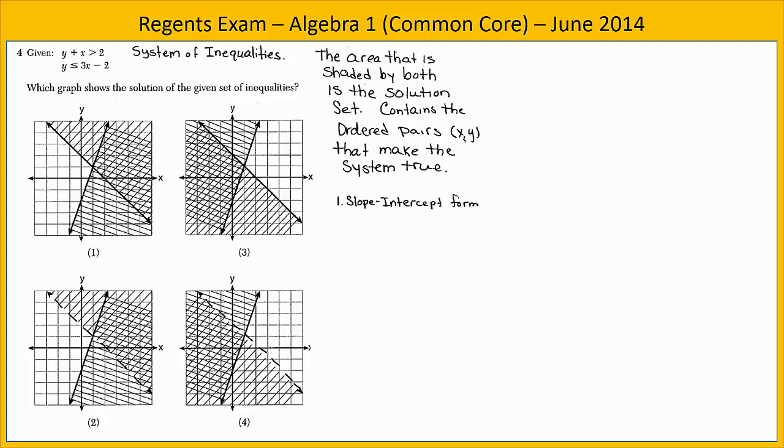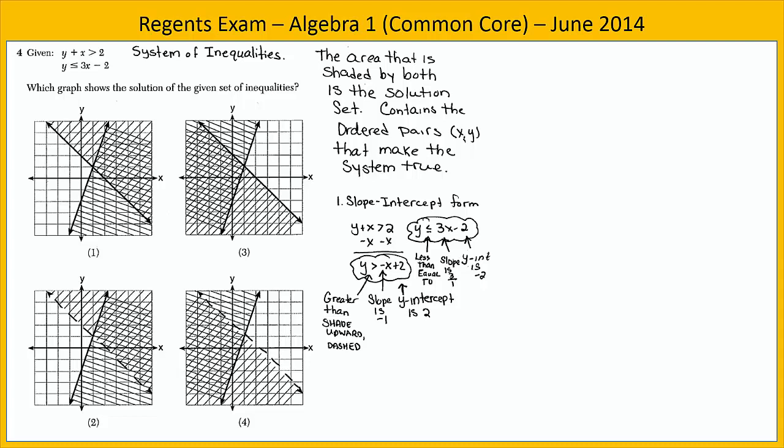In this exercise, we begin by putting both of the inequalities into slope-intercept form. When we do that with the first one, we see that the slope is negative one and the y-intercept is two. Notice that the inequality symbol is greater than, which means we'll be shading upward from the line and it'll be a dashed line because it's not equal to, it's simply greater than values. It doesn't include the values on the line. The second inequality is already in slope-intercept form. We see that we have a slope of three, a y-intercept of negative two, and that the symbol is less than or equal to. For that inequality, we'll be shading downward from the line and that will be a solid line because the values are equal to, so the line is included.